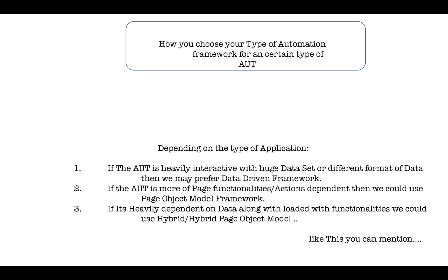How do you choose your type of automation framework? It depends on the type of application. If the application is heavily dependent on large datasets in formats like PDF, Excel, CSV, XML, JSON, or properties files, you can mention a data-driven framework. If it has lots of functionalities and pagination, mention page object model. If it's heavily dependent on data along with many functionalities, mention a hybrid framework.